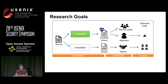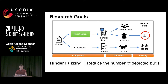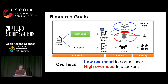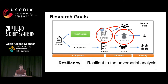Considering our motivation and threat model, what could be a good research goal? Of course, we should reduce the number of discovered bugs — that's most important. Since we don't know which fuzzers the adversary will use, our solution should be generic to most fuzzers. The fortified binary should introduce high overhead only to attackers, not normal users. Finally, since we assume the adversary knows our technique, our solution should be resilient to adversarial analysis.